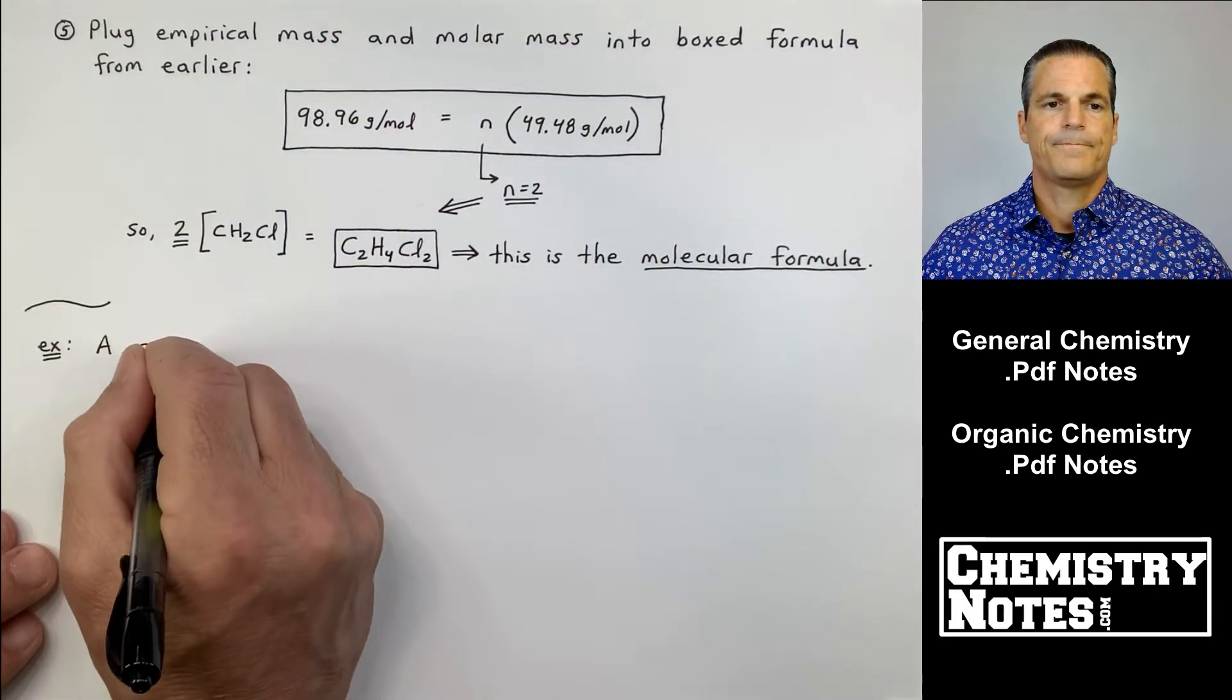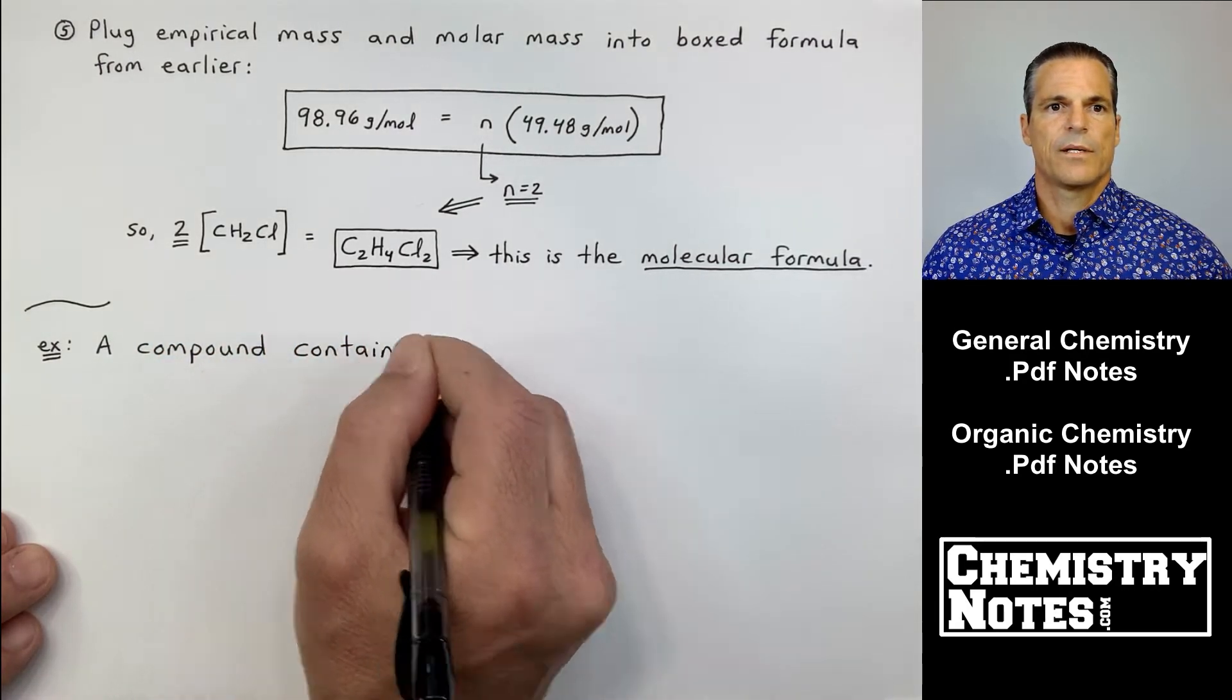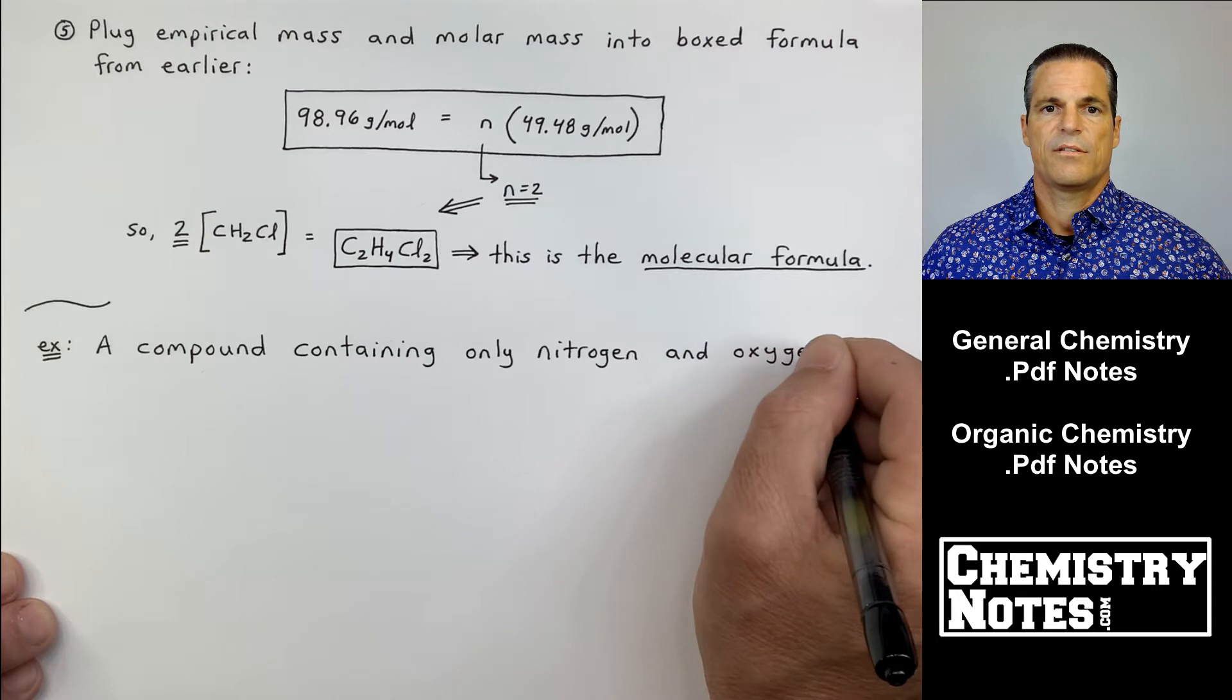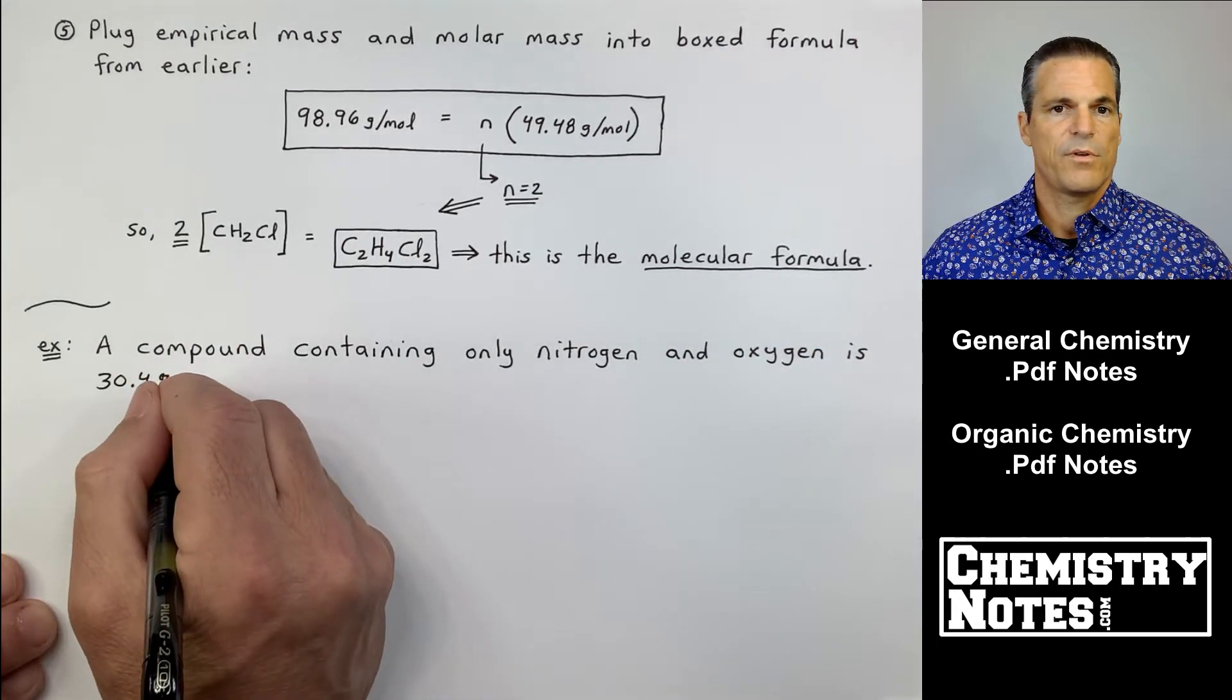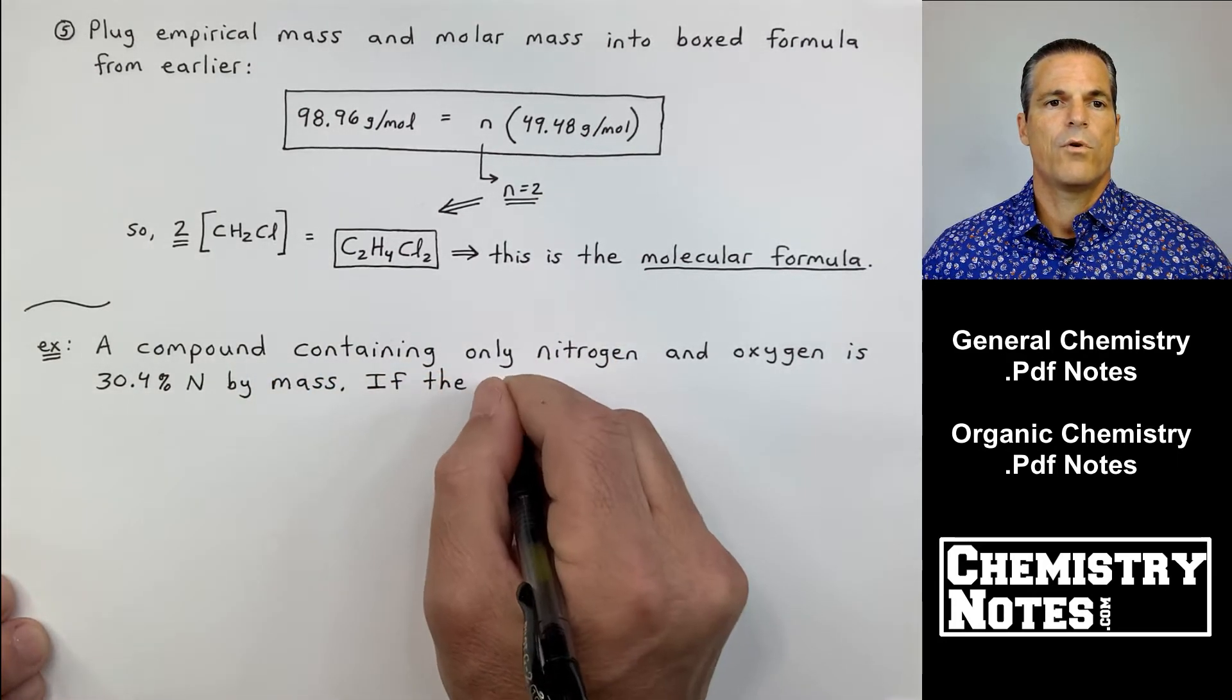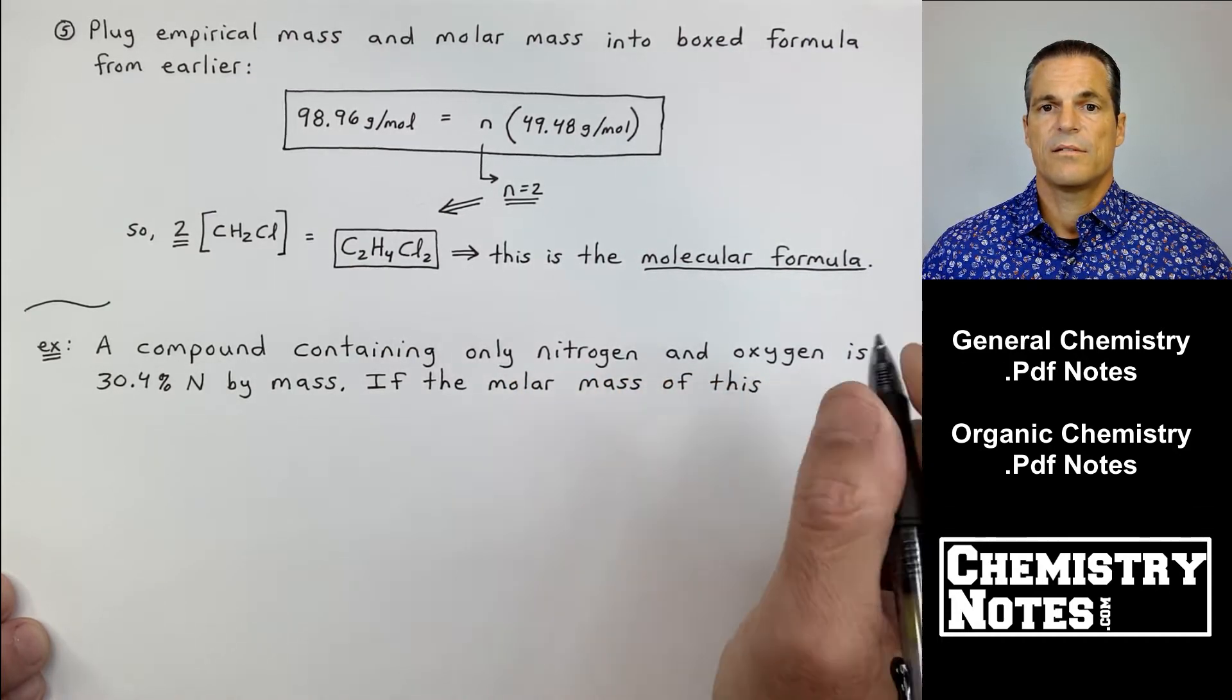In this example, the following: a compound containing only nitrogen and oxygen, so this is going to be N something, O something. We've only got two elements.